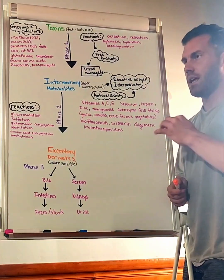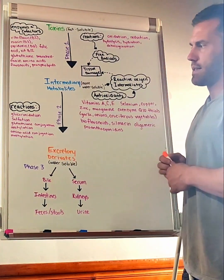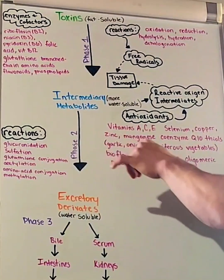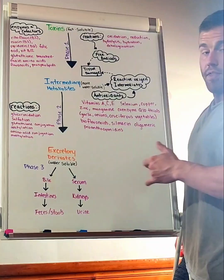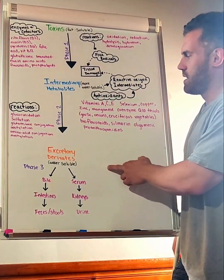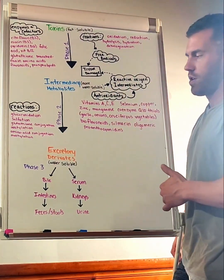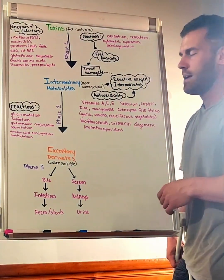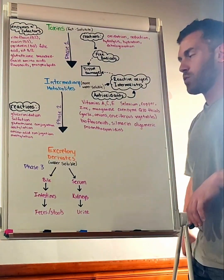When we get down to phase two, we're going through a few different processes: glucuronidation, sulfation, glutathione conjugation, acetylation, methylation. Methylation is a really big one in this phase, and we require those nutrients for methylation to occur.